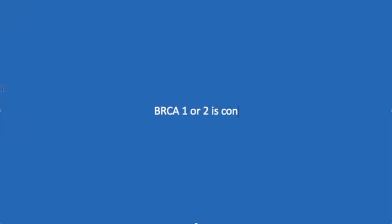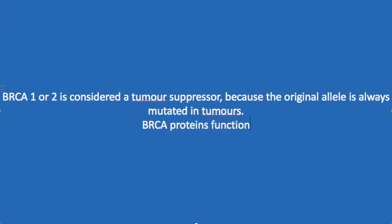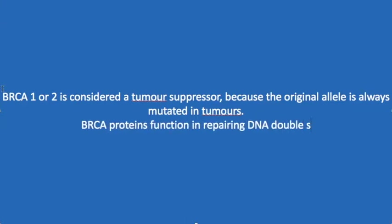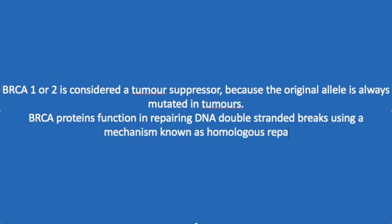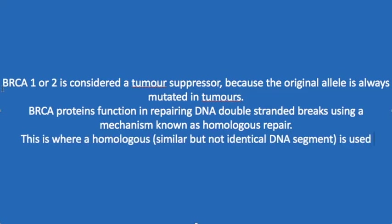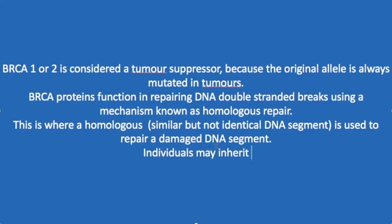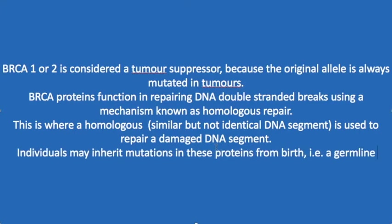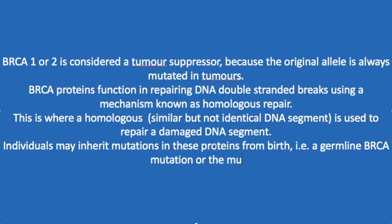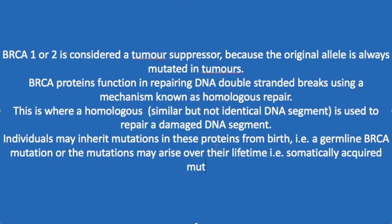BRCA1 and BRCA2 proteins are considered tumor suppressors because the original allele is always mutated in tumors. BRCA proteins function in repairing DNA double-strand breaks using a mechanism known as homologous recombination — where a homologous, similar but not identical, DNA template is used to repair a damaged DNA segment. People may inherit mutations in these proteins from birth — a germline BRCA mutation — or the mutations may arise over their lifetime as a somatically acquired mutation.